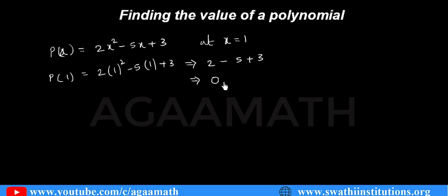Finding the value of a polynomial is very simple, children. You just need to know about substituting the value and simplifying it. Let me come with one more example. If f of x — let me take f of x equals to x cubed minus 6x squared...